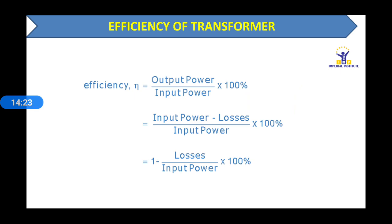Next is the efficiency of the transformer. Efficiency depends on how well the transformer operates. The efficiency formula is: output power divided by input power, multiplied by 100. This can also be expressed as input power minus losses. Transformers have different types of losses.